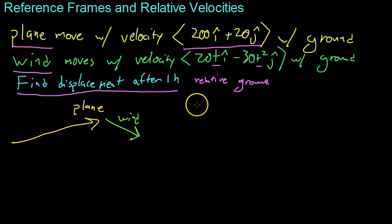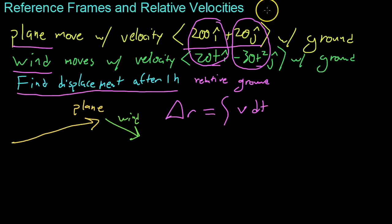As we learned before, displacement delta r is simply the integral of your velocity vector with respect to time. And how do we find the plane's total velocity vector relative to the ground, taking into account the wind? What we have to do is just add the components, as we discussed very recently. You add the two Vx components and the two Vy components to get your overall Vx and Vy.